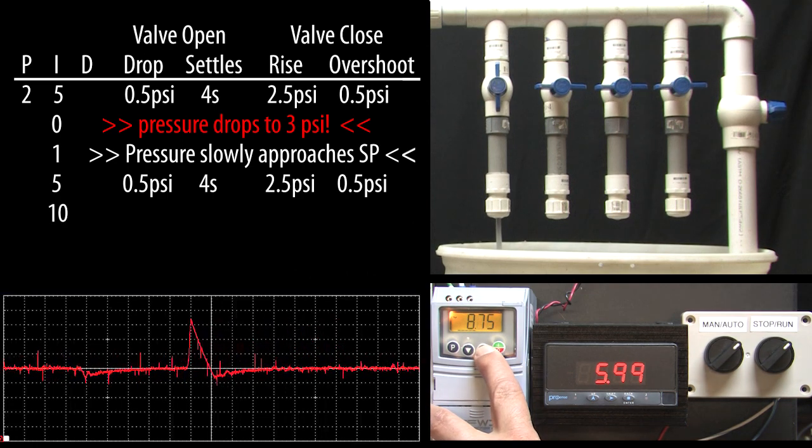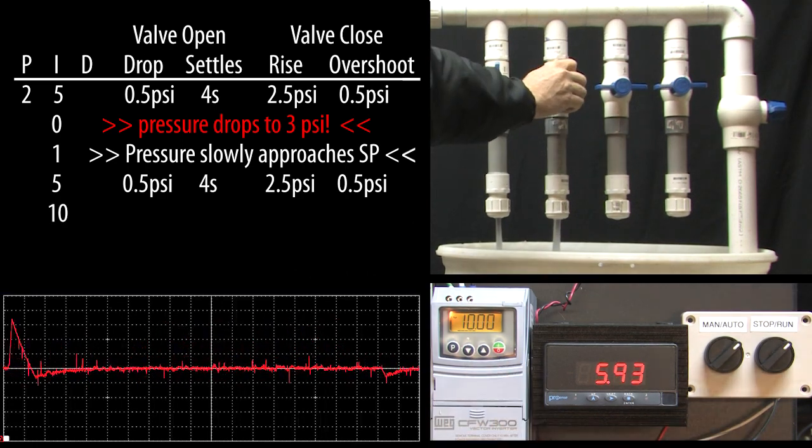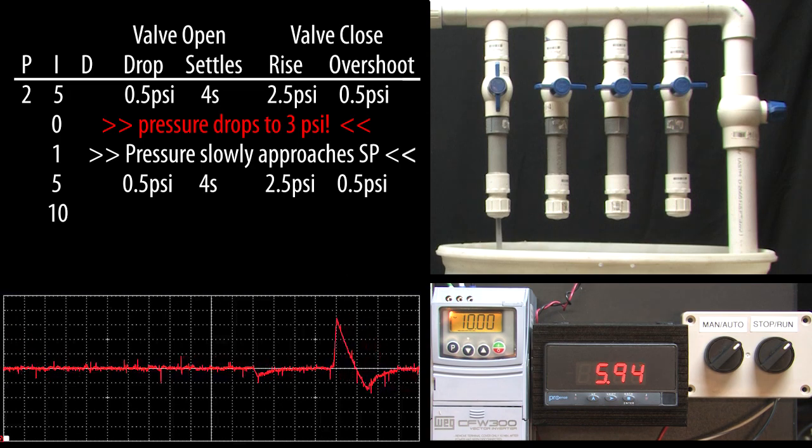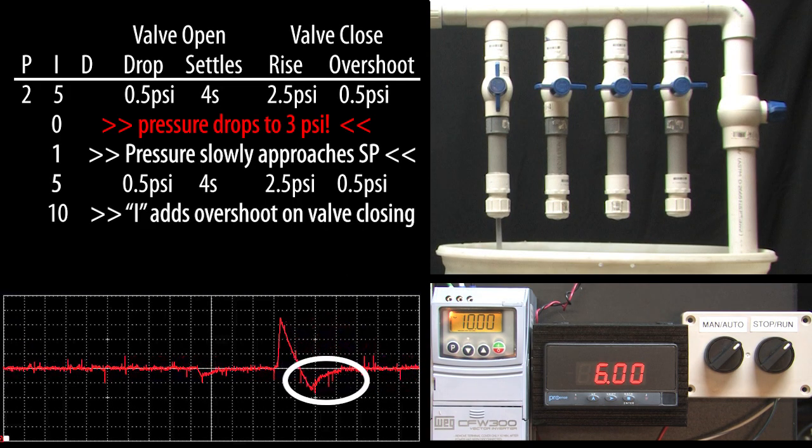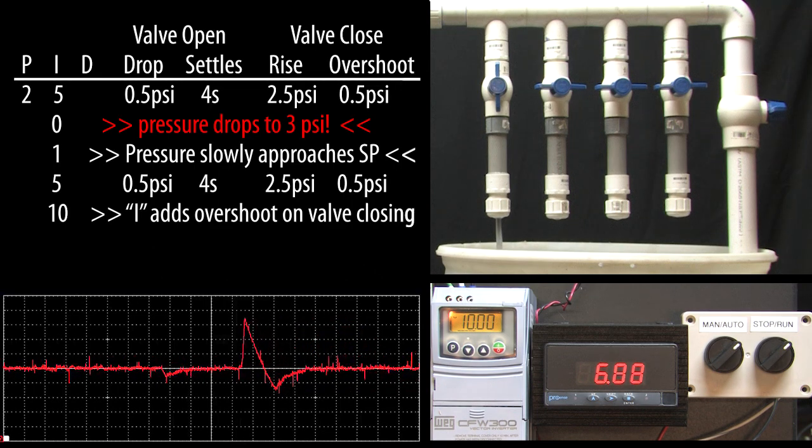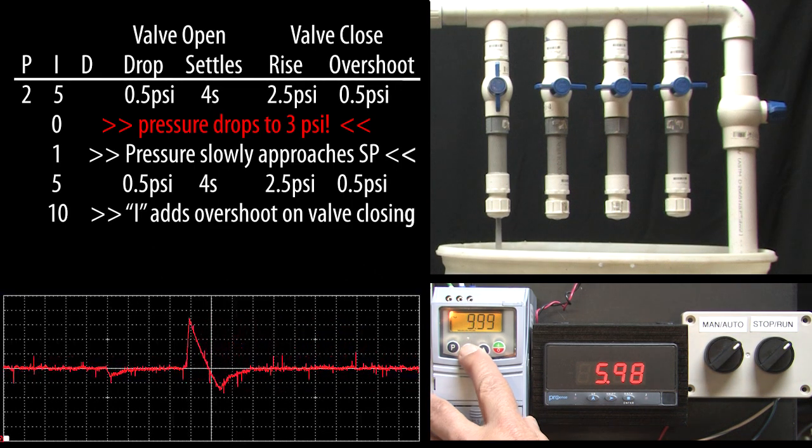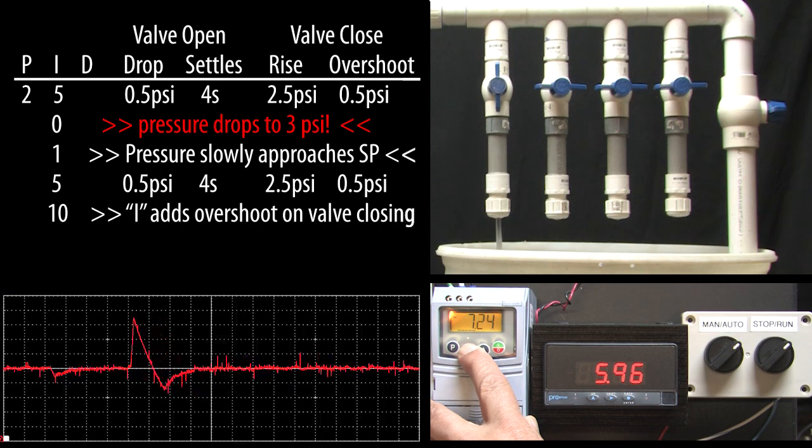OK, let's double I to 10 and open and close the valves. Ah look, the I term seems to be the one that's impacting the overshoot on the valve closing. And since we were doubling it every time we doubled P, it kept getting worse. So that begs the question, could we reduce I and increase P to get a faster response with a smaller overshoot?